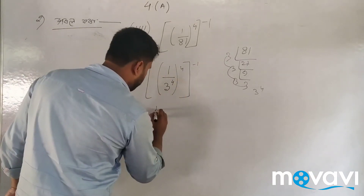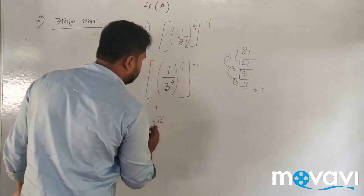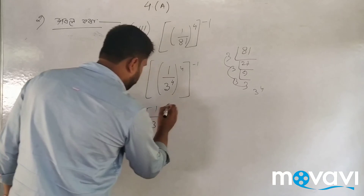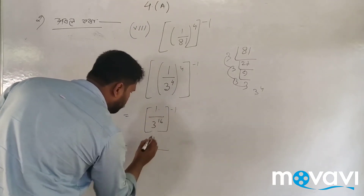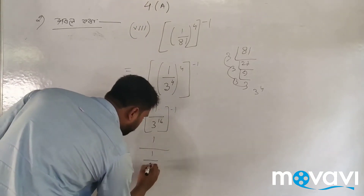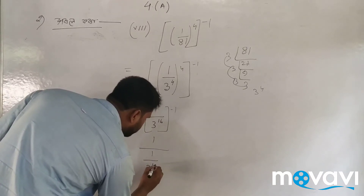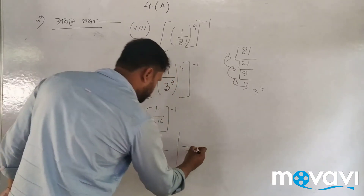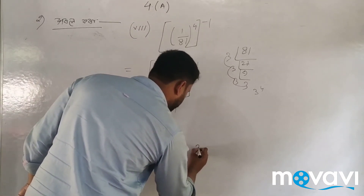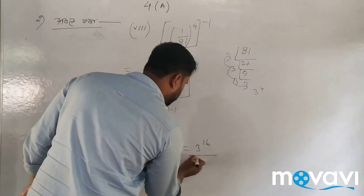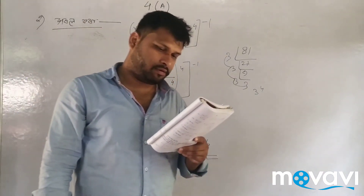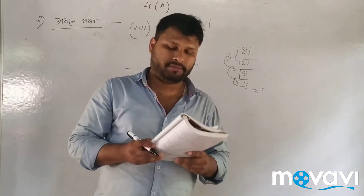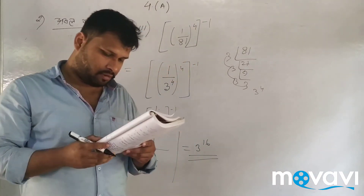So the answer is 1 by 10. This area gives us one by sixteen — wait, let me correct that. The final answer for this expression is 1 by 10, since 100 to the power minus 1 by 2 equals 1 over the square root of 100, which is 1 by 10.